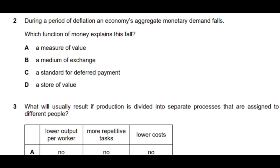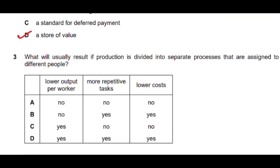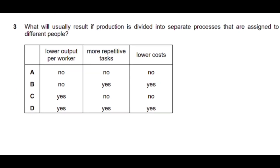Question number two: during a period of deflation, an economy's aggregate monetary demand falls — which function of money explains this? Option D is the correct answer: a store of value. However, this question will not be tested in AS Economics as it is not in the current syllabus, though it may be tested at A2.